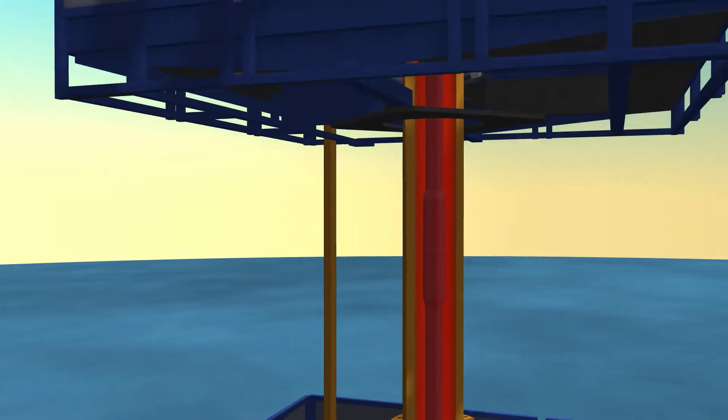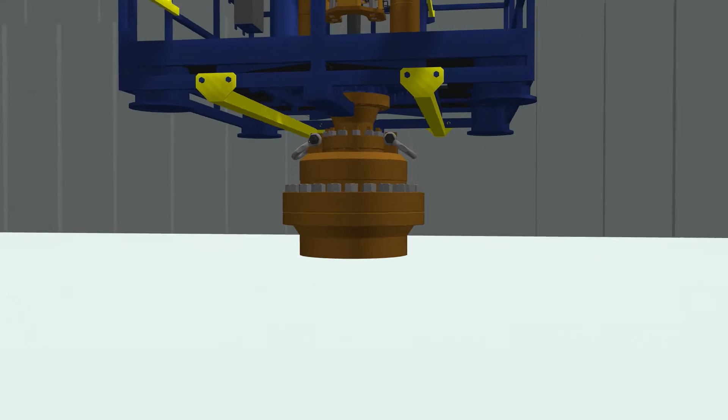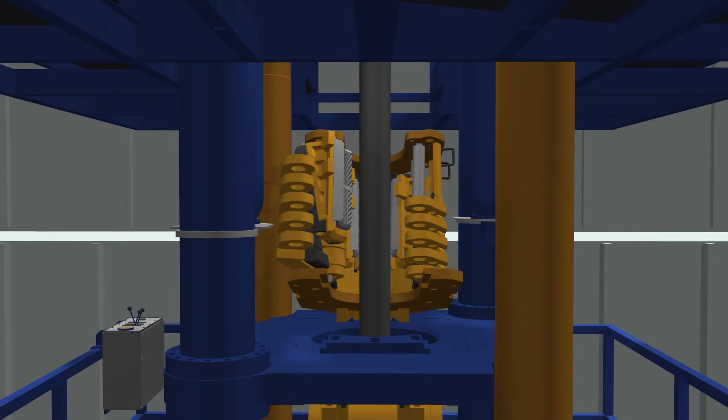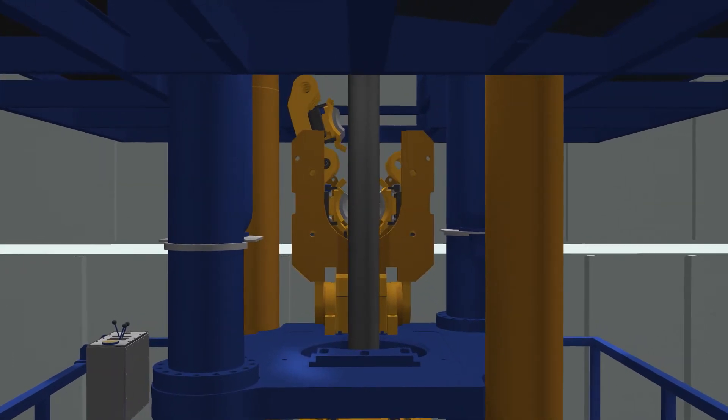During conventional drilling, the unit imposes no restrictions. A full through-bore opening is maintained by rotating the slips away from the well center.